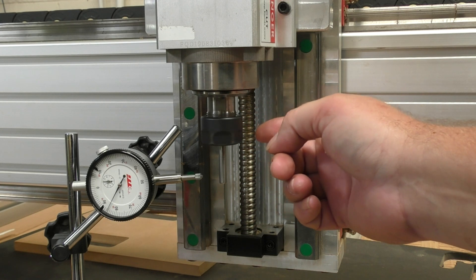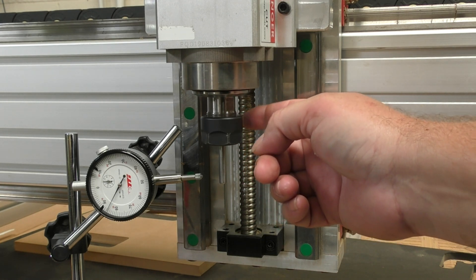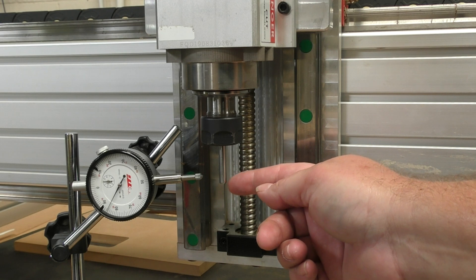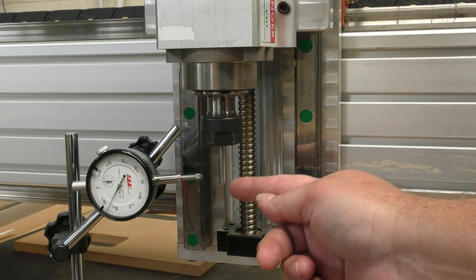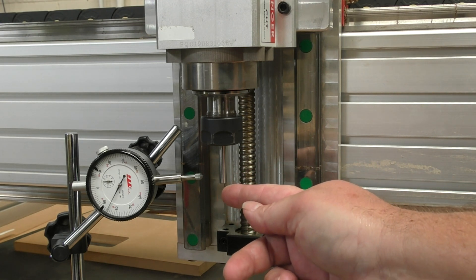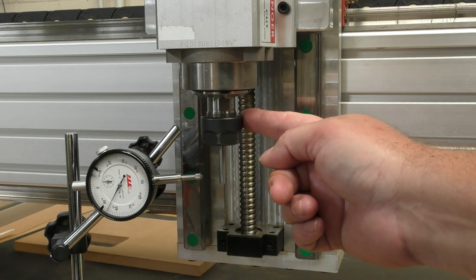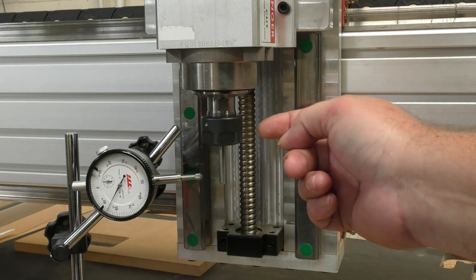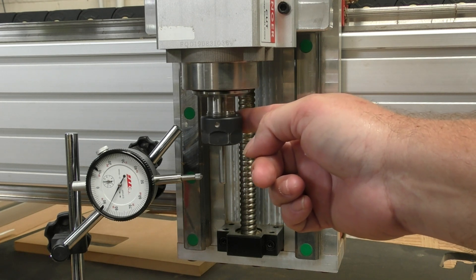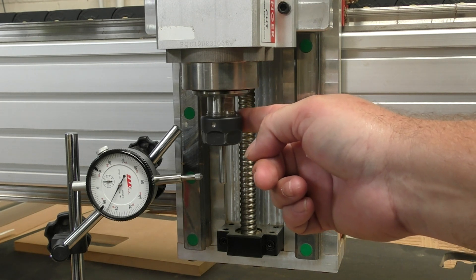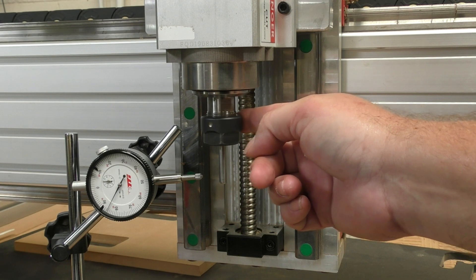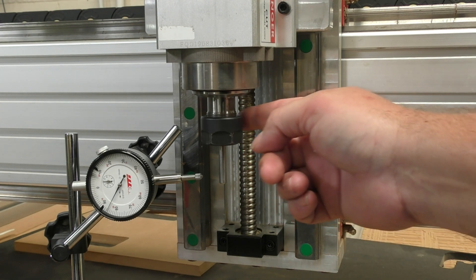What we find is run out is where the tip down the bottom here is actually wiggling side to side, it's not going perfectly straight up and down. What that does is it can cause breakages to occur on your end mills, and it can also make your surface finish very rough and your edge finish as well.